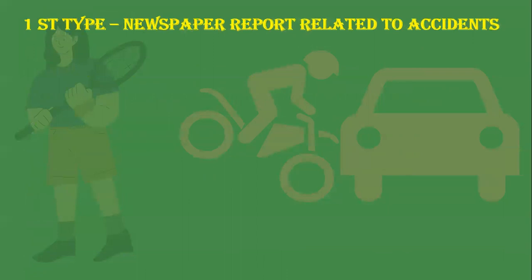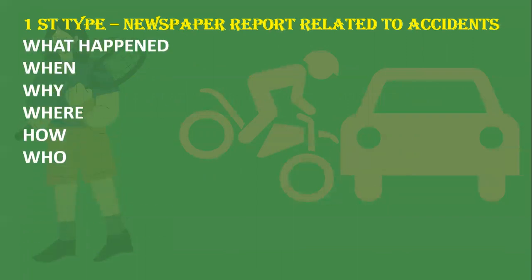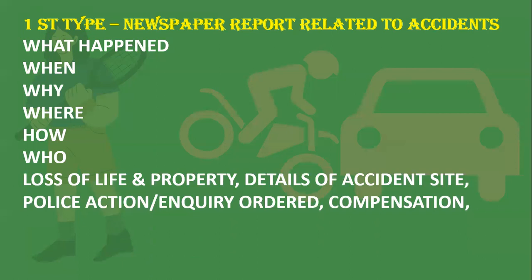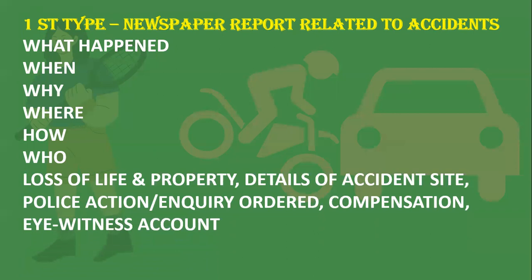The first type is the newspaper report related to accidents. You need to answer: what happened, when did it happen, why did it happen, where did it happen, how did it happen, and who was the victim or who lost their life. Also cover loss of life and property, details of the accident site, police action — whether police personnel took any action or initiated an enquiry, and whether compensation has been given. Include an eyewitness account as well.